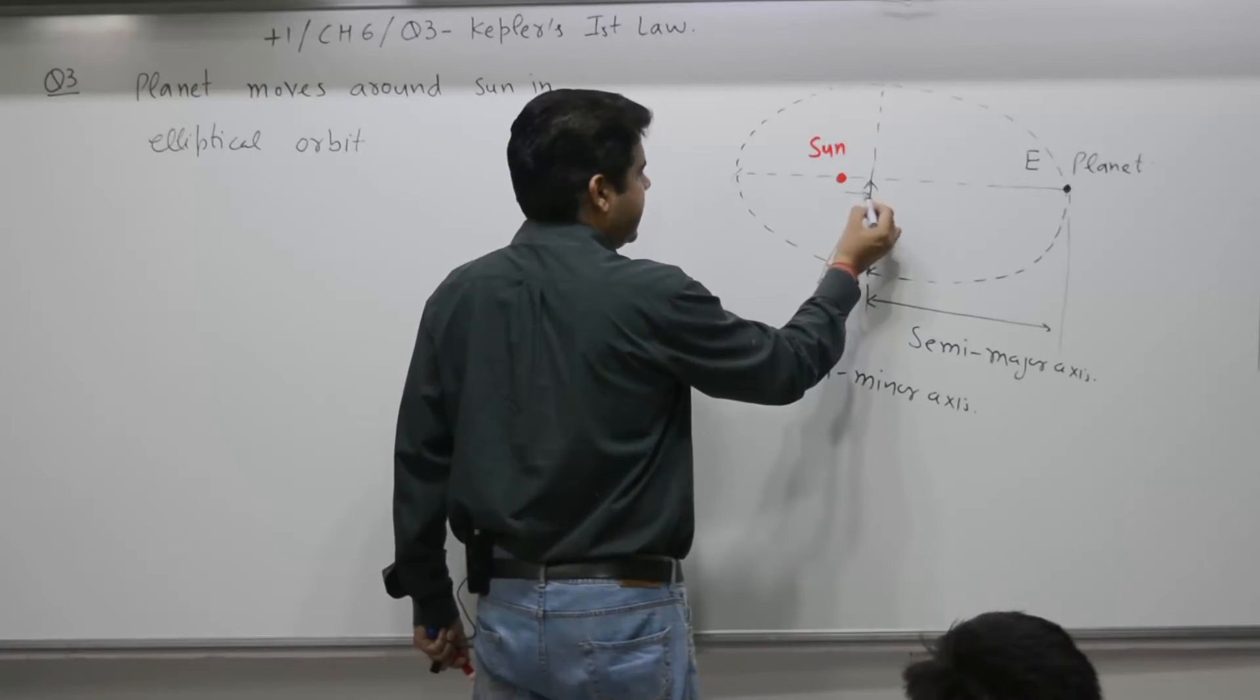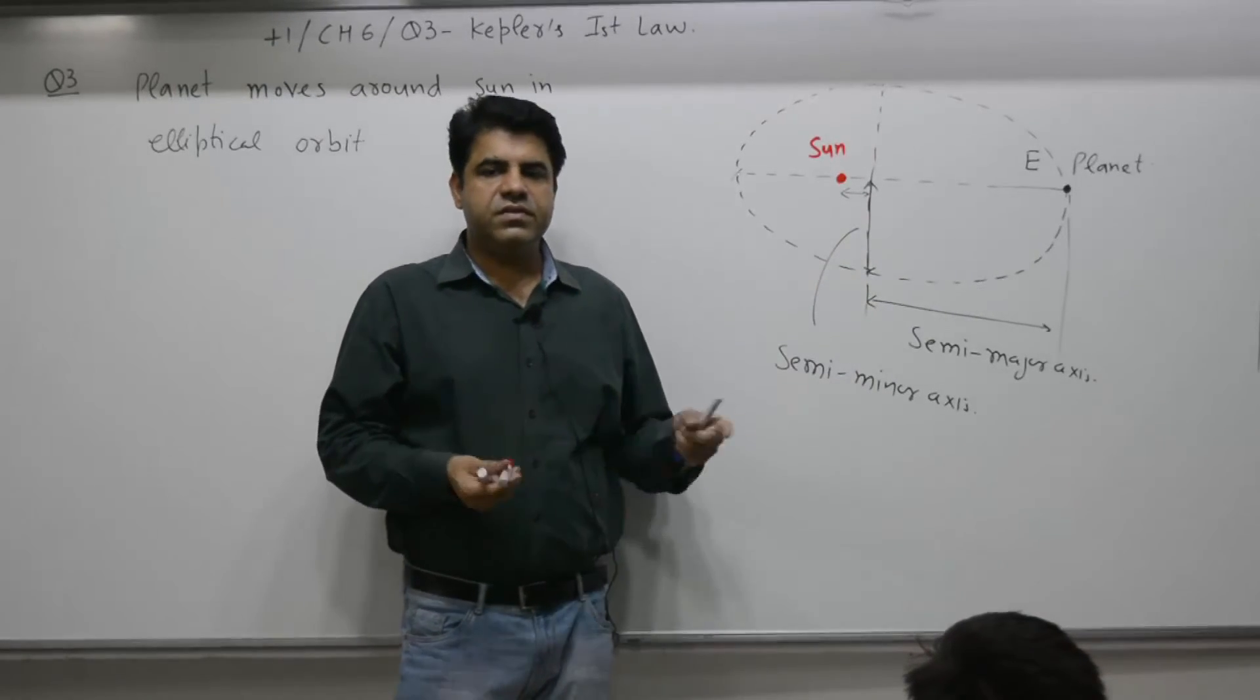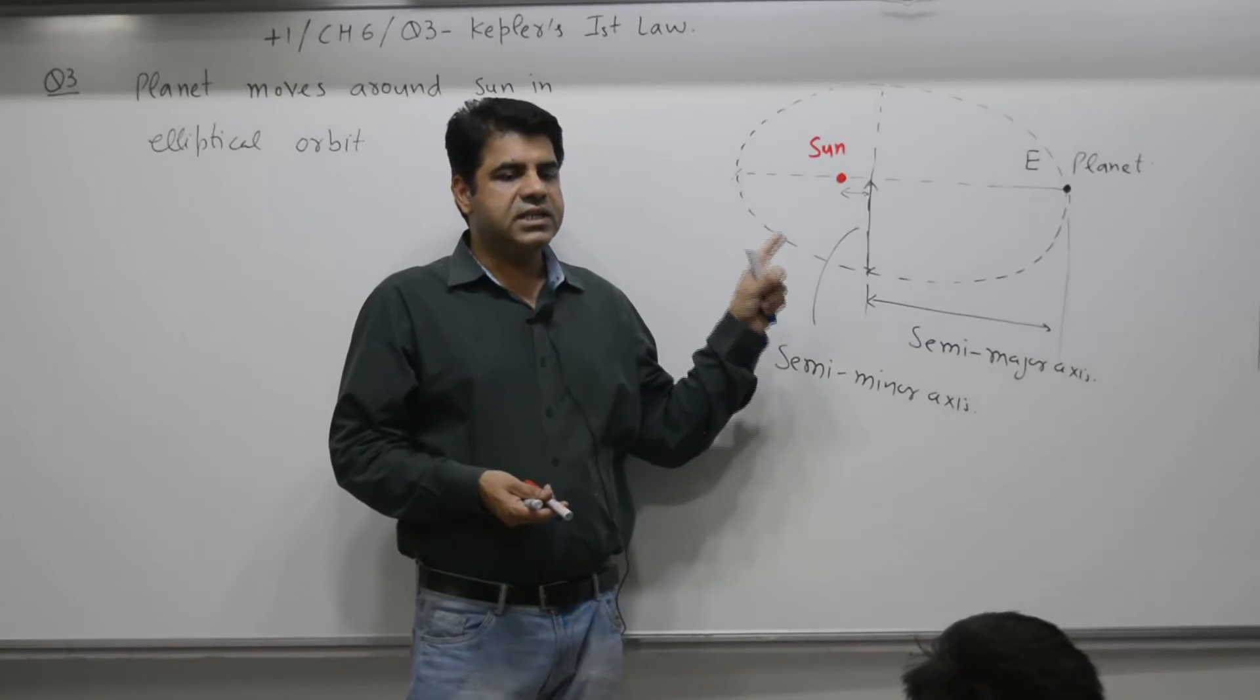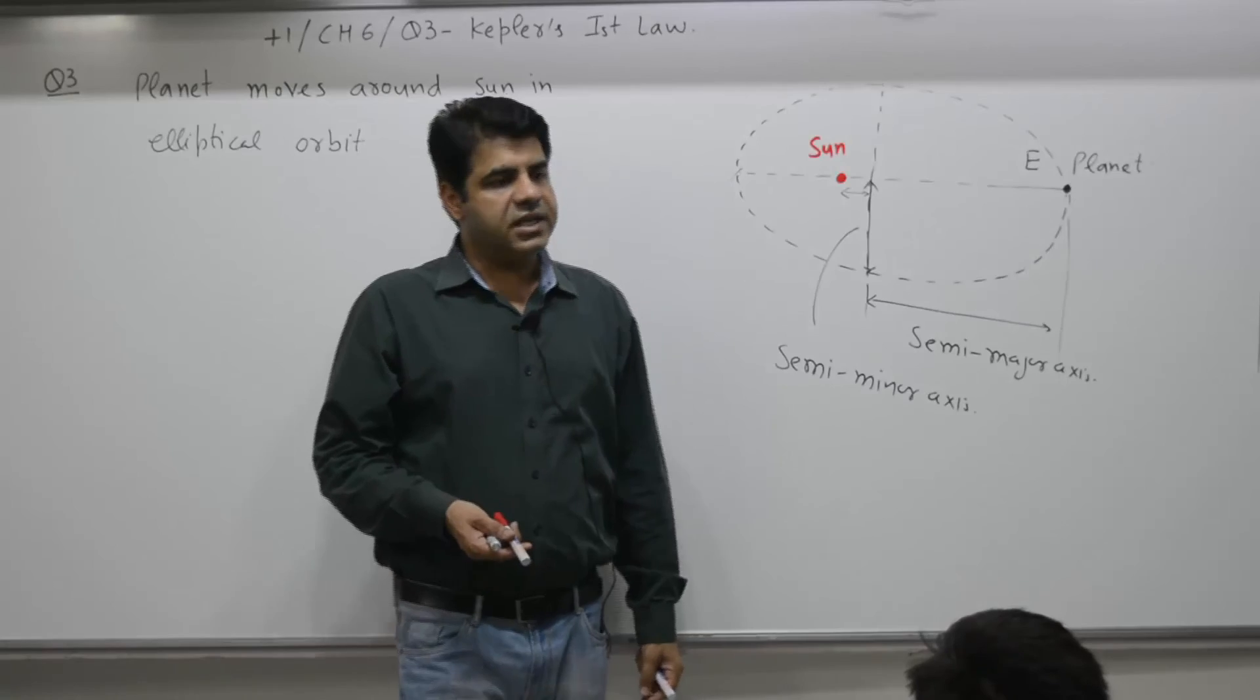The sun is shifted slightly from its position. It is known as eccentricity, shifted from the center. It is not in the center of this arrangement, it is shifted slightly, termed as eccentricity.